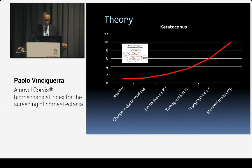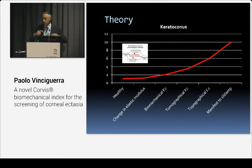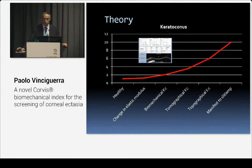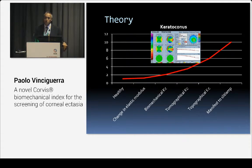The theory is that we start with healthy eyes, then patients begin to show a change in elastic modulus with increased stress-strain that redistributes the stress, increases curvature, and that progressive change alters the biomechanics of the cornea — as has been shown earlier in this presentation. Later, you start to see something in the tomography, such as changes in posterior elevation.